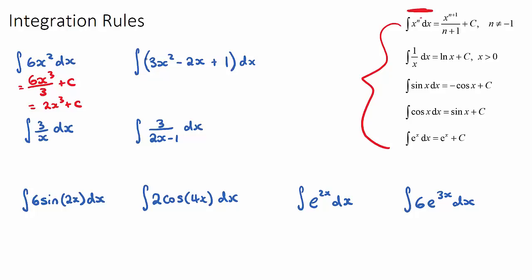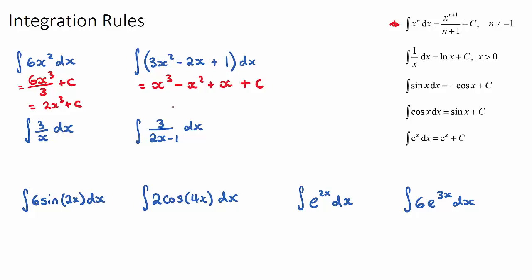If you see an integral where we have terms that have been added or subtracted, we just integrate each of them individually. Integrating 3x squared gives 3x cubed over 3, the 3s cancel to give x cubed. Then minus 2x becomes 2x squared over 2, the 2s cancel to give x squared. Integrating the constant 1 just becomes x, and then we have our plus c.